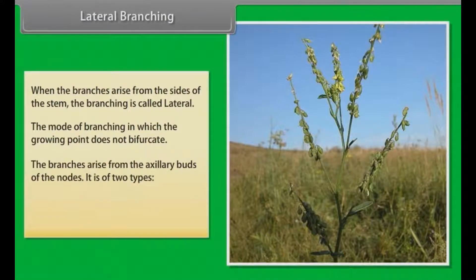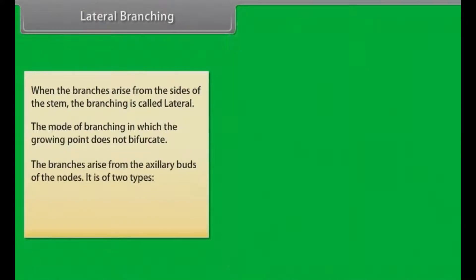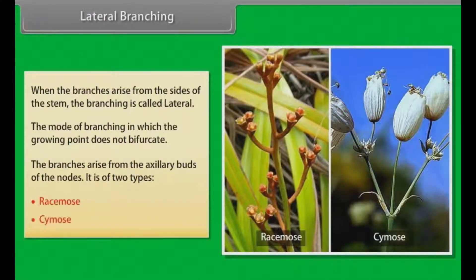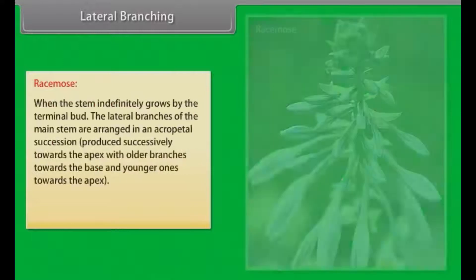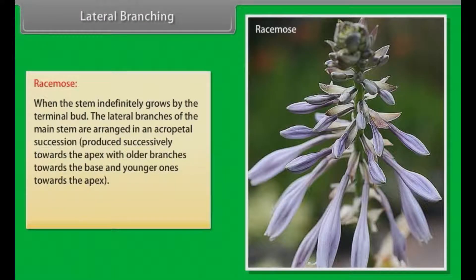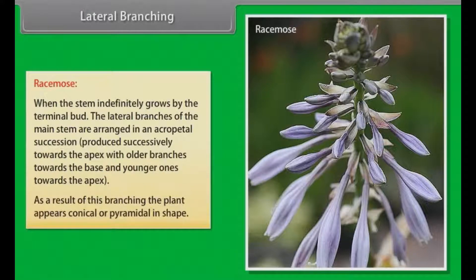Lateral branching is of two types: racimose and cymose. In racimose, the stem indefinitely grows by the terminal bud; the lateral branches of the main stem are arranged in an acropetal succession, produced successively towards the apex, with the older branches towards the base and younger ones towards the apex. As a result of this branching, the plant appears conical or pyramidal in shape.